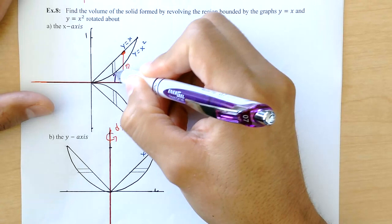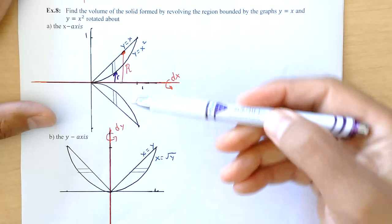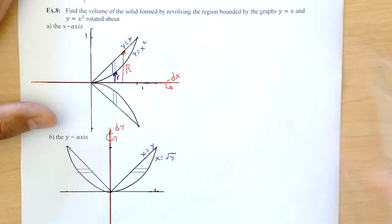And that small radius, I'm going to call little r. So the big R is x, the little r is x squared.